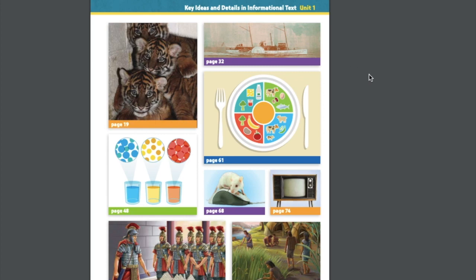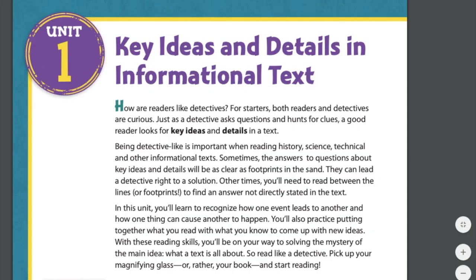Unit 1 is about key ideas and details in informational text. That means all the passages we read for the next few weeks will be nonfiction — about things that really happened in the past, or that give us information about how to do something or teach us about something. Whether you have always enjoyed reading these types of books or articles or chosen other types of literature, I hope you will gain strategies to help you whenever you read an informational text, and find a type of nonfiction text that appeals to you.